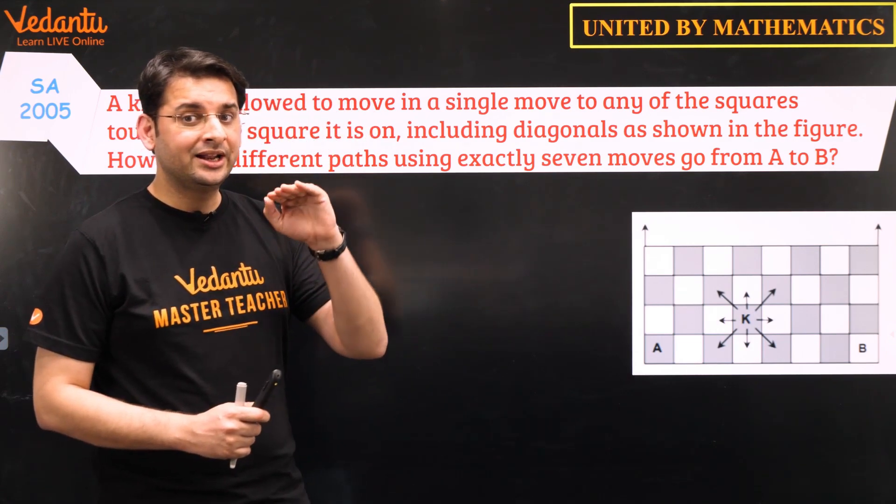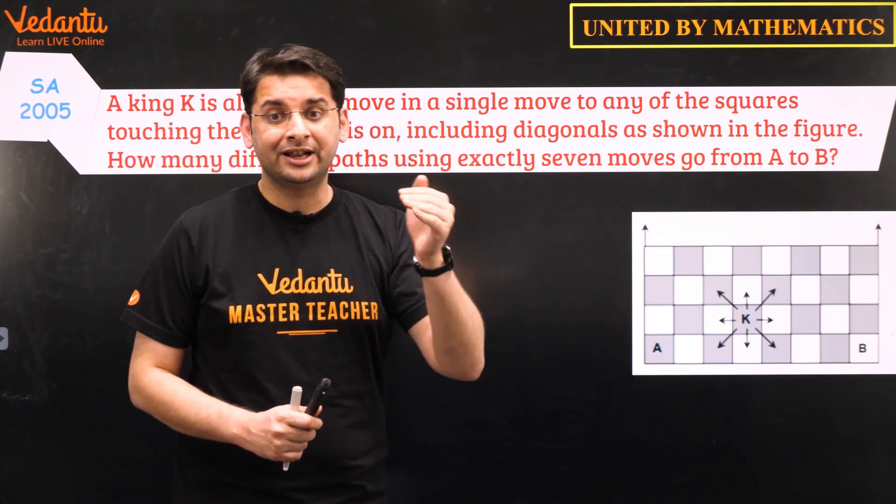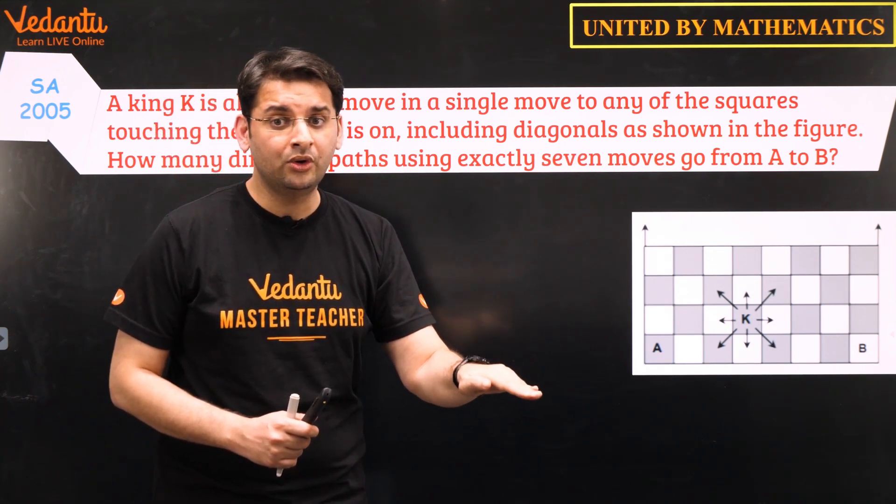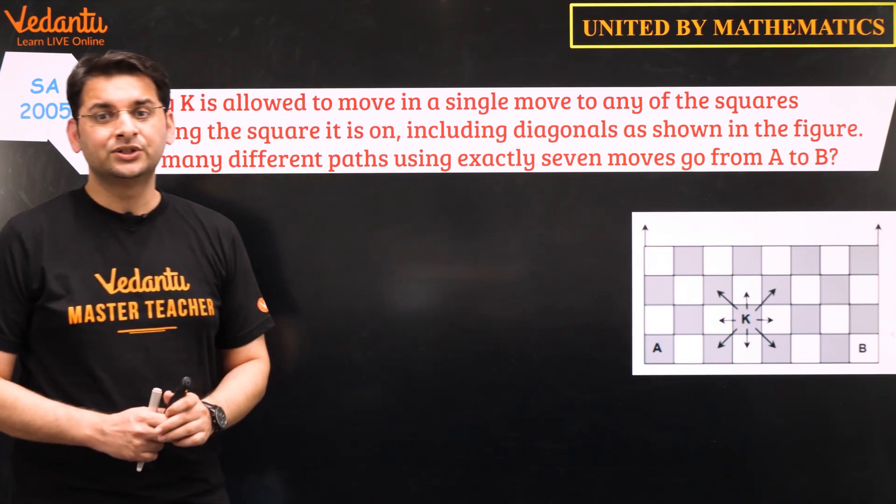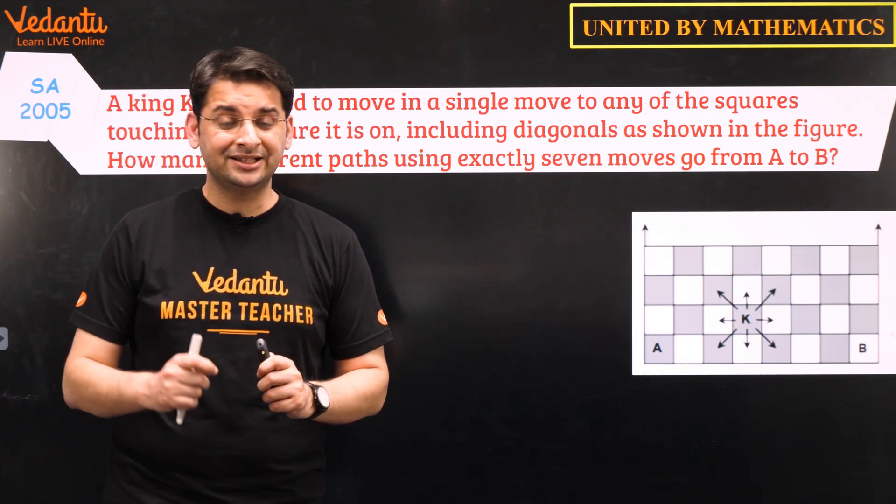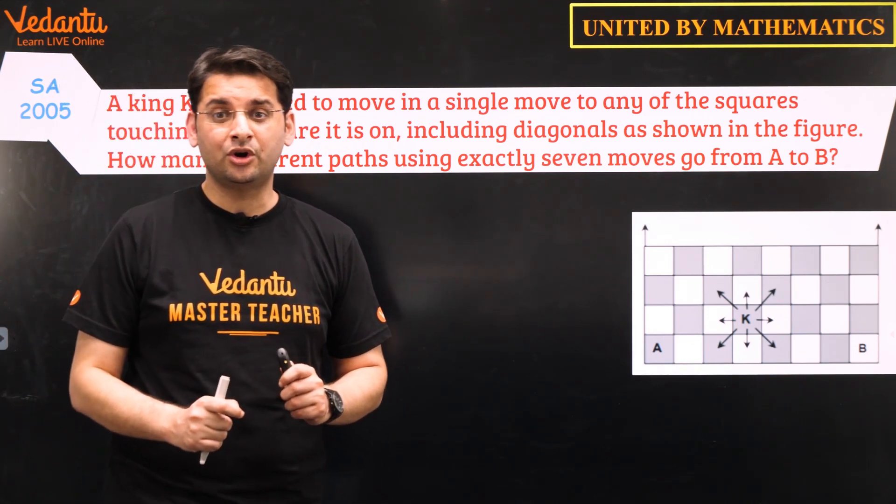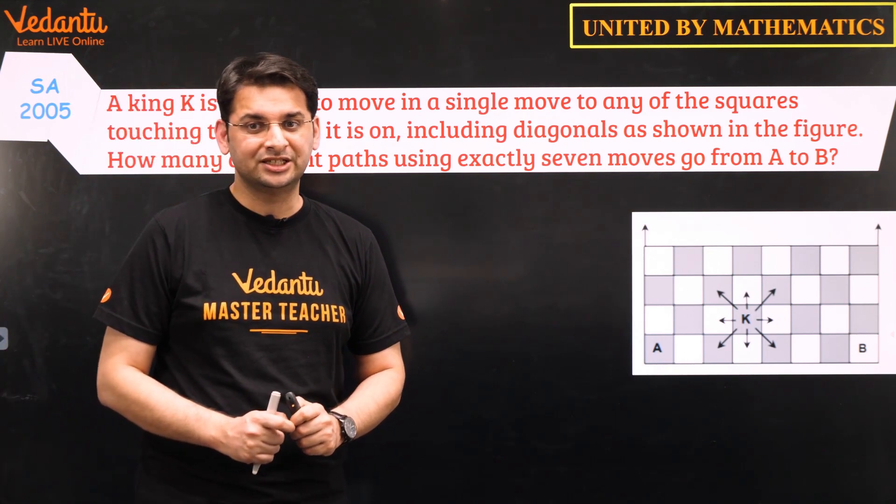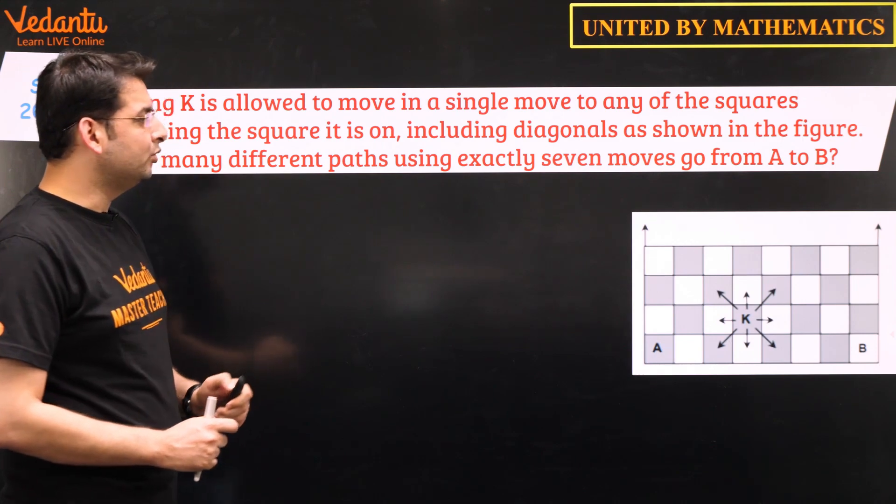Moreover, it can go one row up, it can remain in the same row, or it can go one row below if it is not in the bottom row. So how do we solve this? So this is a very good question based on combinatorics but we'll use a different approach to answer this question. So what is the approach?